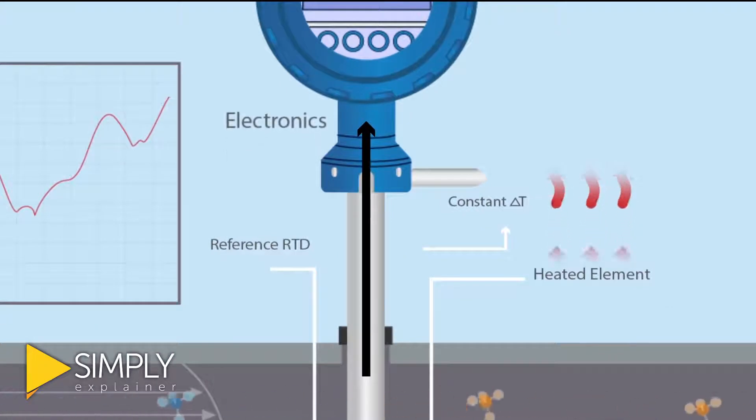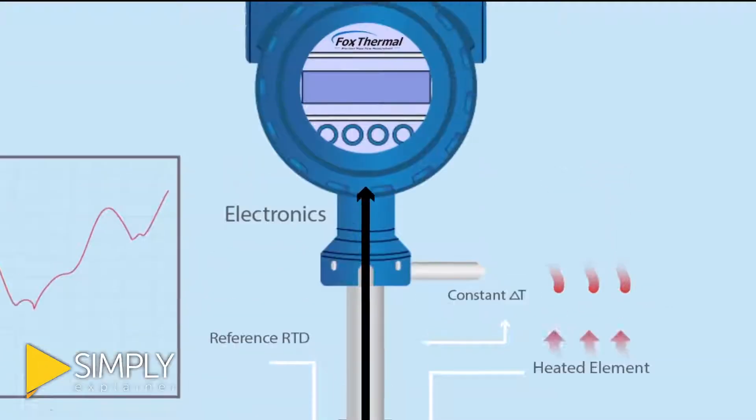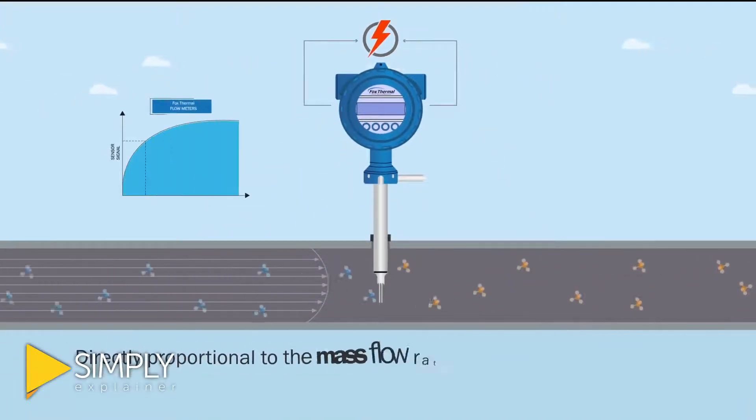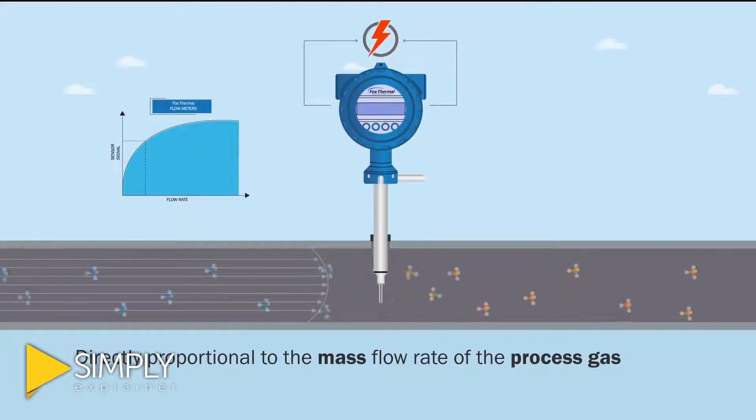The flow meter electronics measure the cooling effect of the gas flow and the electric power required to maintain a constant temperature differential, which is directly proportional to the mass flow rate of the process gas.